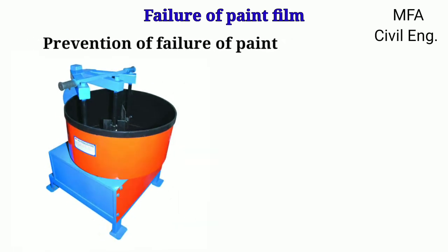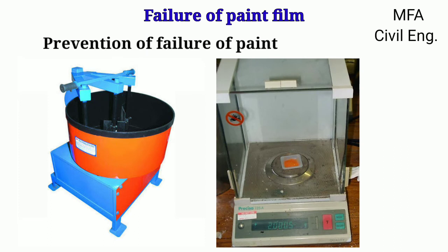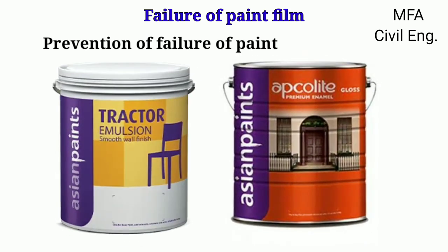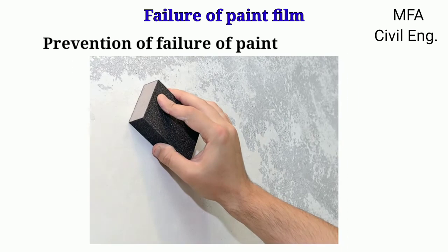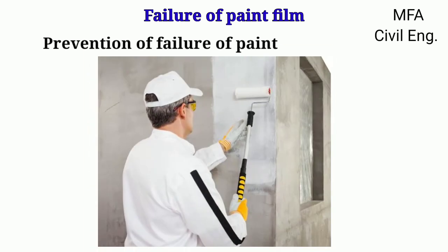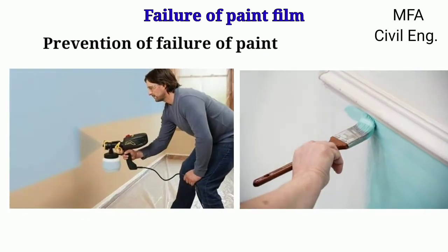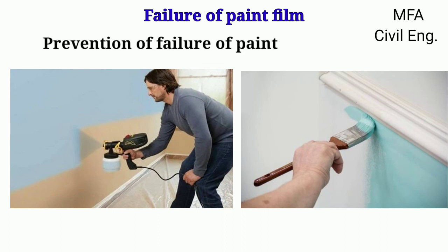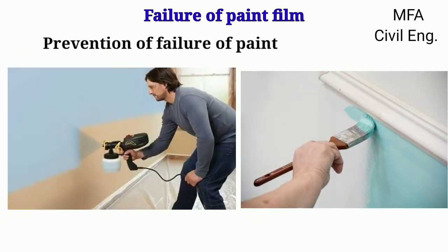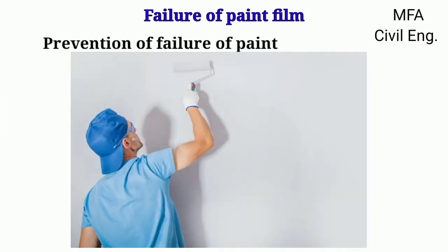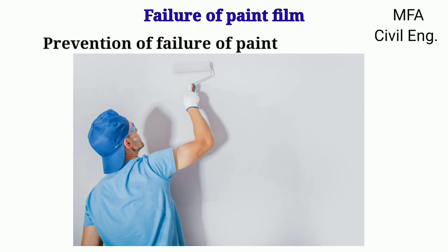The failure of a paint surface can be prevented by: scientific mixing and proportioning of ingredients with proper characteristics; using only suitable and selected paint for the particular job; carefully preparing the surface before applying paint; applying a suitable prime coat evenly; applying the paint by a suitable method like brushing or spraying; and allowing each paint coat to dry sufficiently before the next coat is applied.